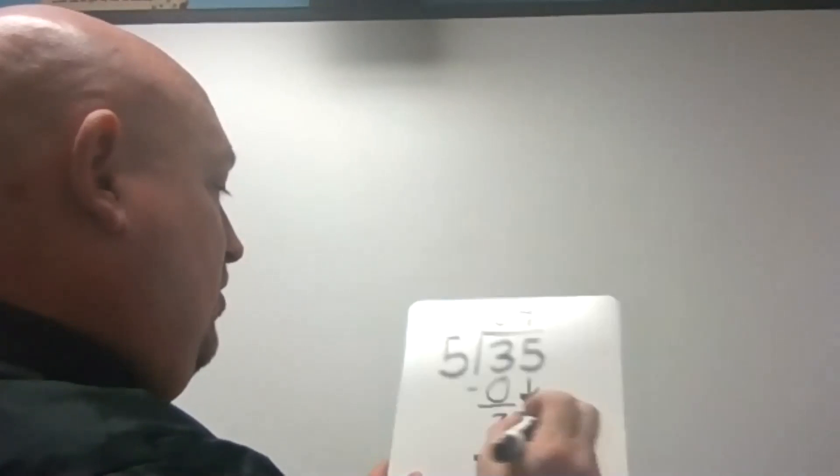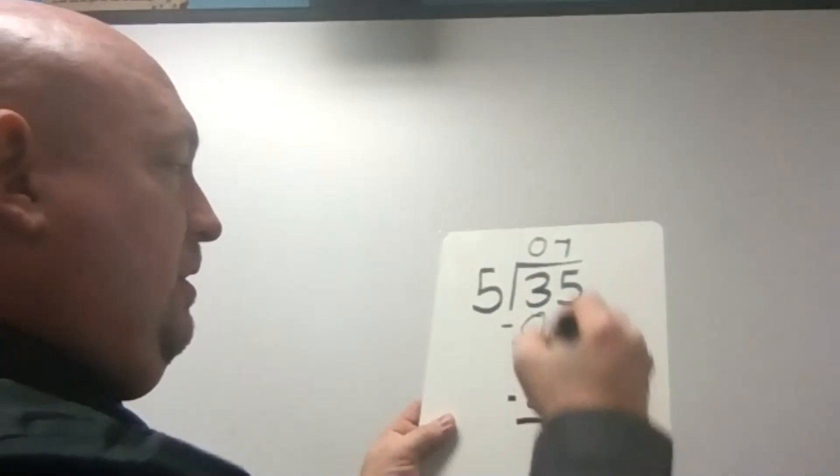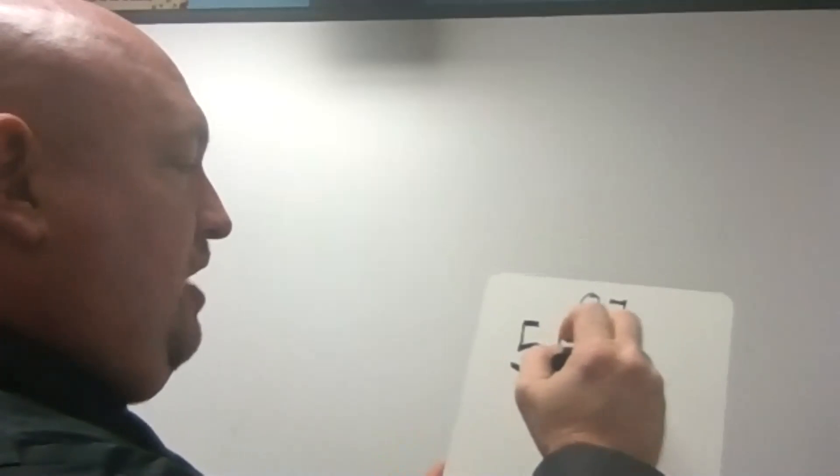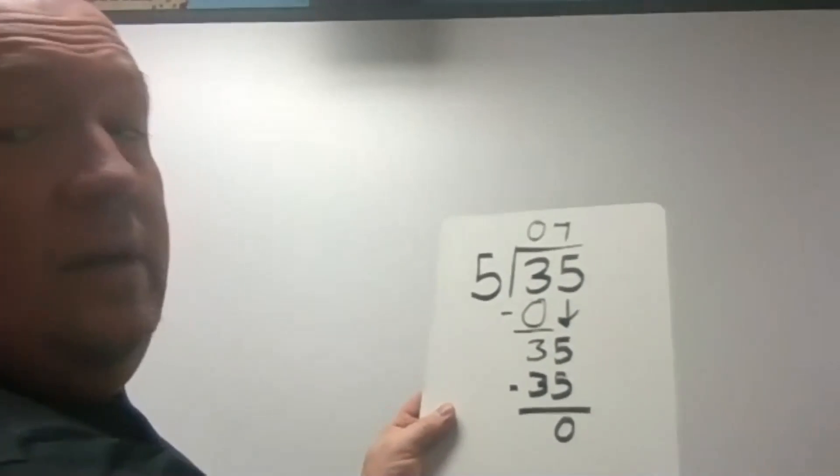7 times 5 is 35. I subtract. There's nothing left over. Notice I kept it in order. And because I didn't have enough tens, I had to regroup those tens into ones, and I ended up with 35 ones. That's what happened there.